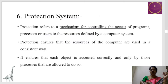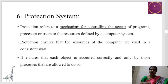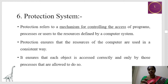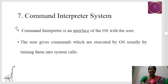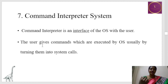Next is the protection system. Protection system refers to the mechanism for controlling the access of the process, program, or users who are allowed to access a particular resource — it refers to the mechanism of controlling who is allowed to access what resource. Next is the command interpreter system. The command interpreter acts as an interface between the OS and the user, and users send commands in terms of system calls to the operating system.